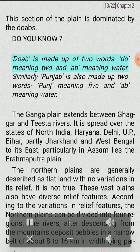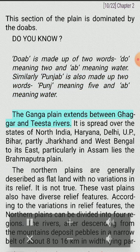Doab is made up of two words: do, meaning two, and ab, meaning water. Similarly, Punjab is also made up of two words: punj, meaning five, and ab, meaning water.